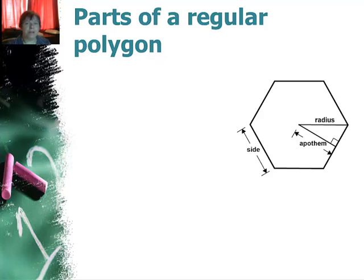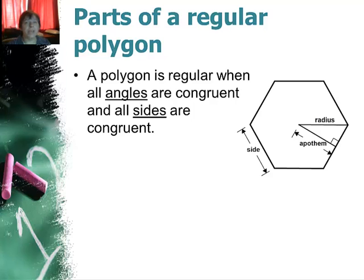So, parts of a regular polygon. First of all we need to remember that a regular polygon is regular if all the angles are congruent, and by angles I mean these little angles of the vertices here. And all the sides have to be congruent. If that is not true it is not a regular polygon. So today we're looking at the area of this type of polygon.